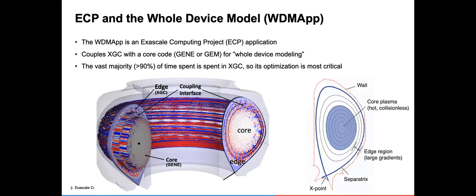The Whole Device Model or WDM app is an exascale computing project. The idea is that XGC is specialized to work on the edge of a plasma, so we can couple XGC with a core code like GENE or GEM. That enables whole device modeling. The vast majority, over 90% of time, is spent in XGC, so its optimization is most critical. That's what I'm going to be talking about.